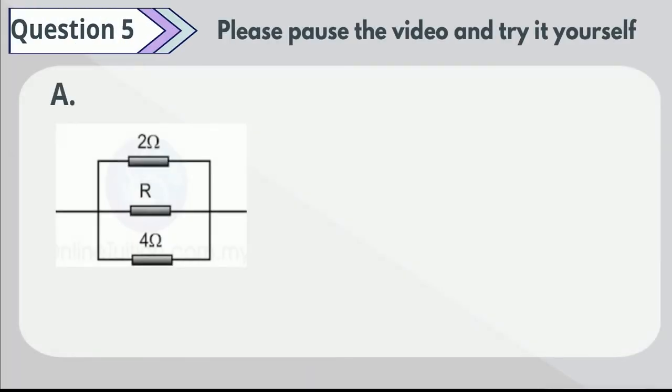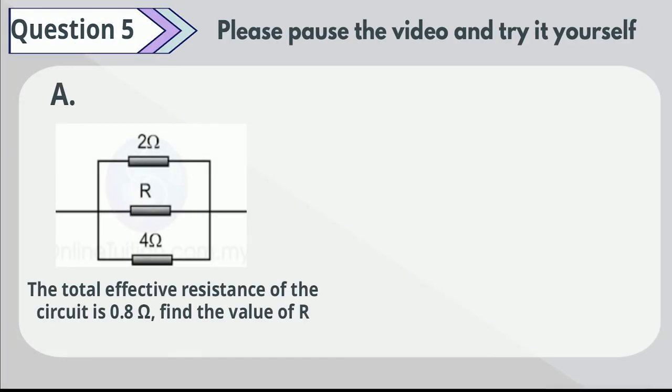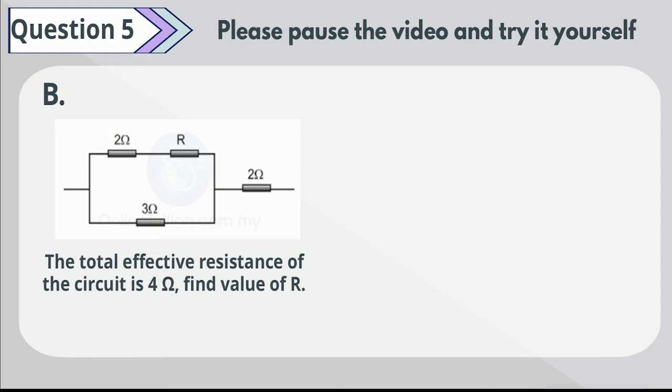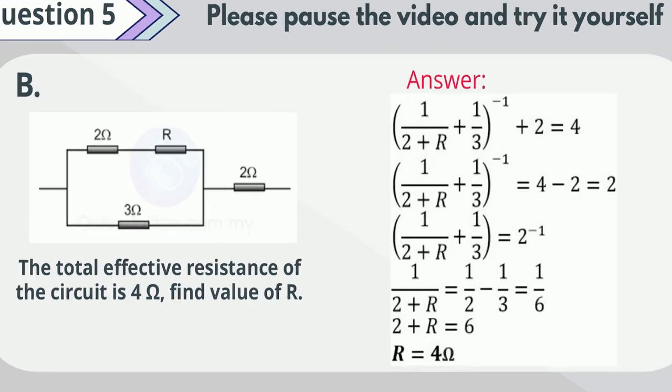Question 5A: the total effective resistance of the circuit is 0.8 ohms. Find the value of R. Please pause the video to try it yourself. The answer to R is 2 ohms. Question 5B: the total effective resistance of the circuit is 4 ohms. Find the value of R. Please pause the video to try it yourself. The answer to R is 4 ohms.